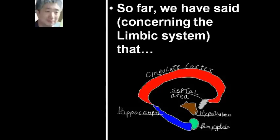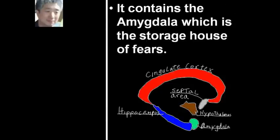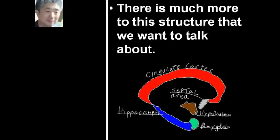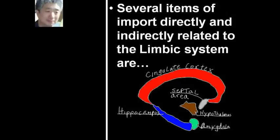So far, we have said concerning the limbic system that it contains the amygdala, which is the storage house of fears. We briefly touched on the tragic case of Howard Hughes. There is much more to this structure that we want to talk about. Several items of import, directly and indirectly related to the limbic system are: